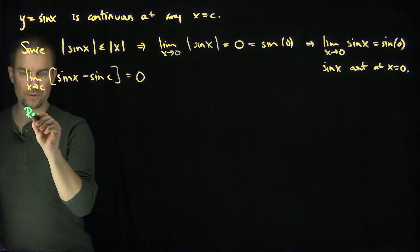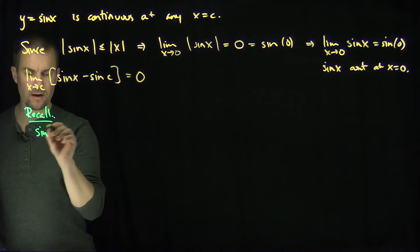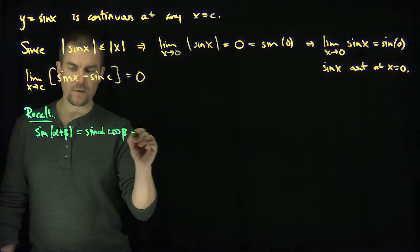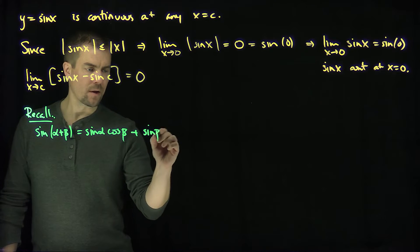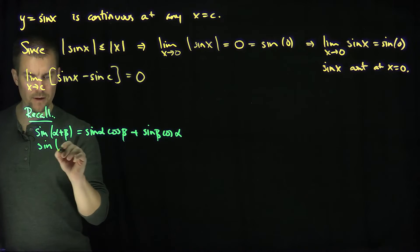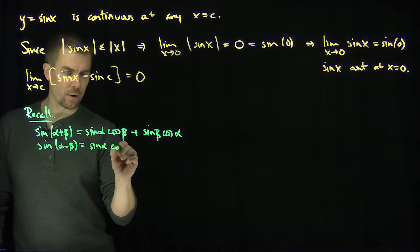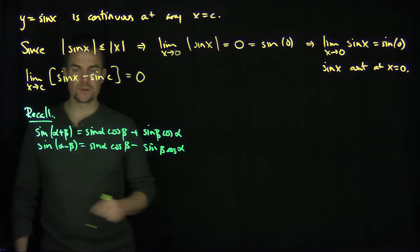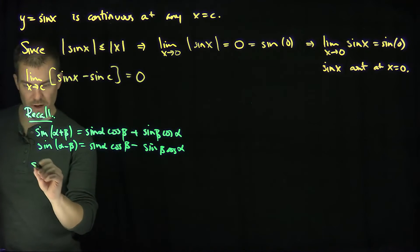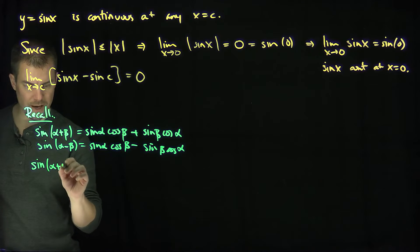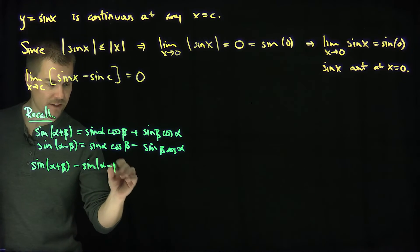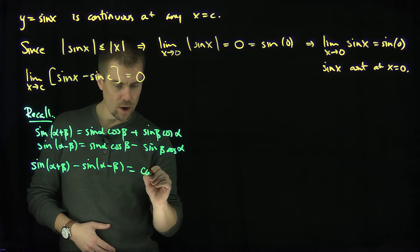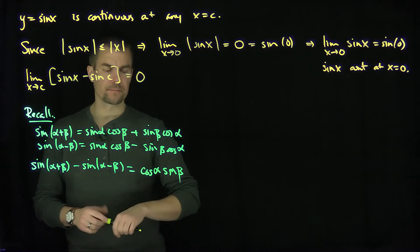Let's recall the angle addition formulas: sine of alpha plus beta equals sine of alpha times cosine of beta plus sine of beta times cosine of alpha, and sine of alpha minus beta equals sine of alpha times cosine of beta minus sine of beta times cosine of alpha. If I subtract these two results, the first terms drop out and I get sine of alpha plus beta minus sine of alpha minus beta equals 2 cosine of alpha times sine of beta.